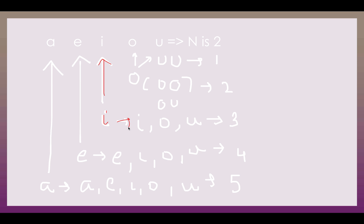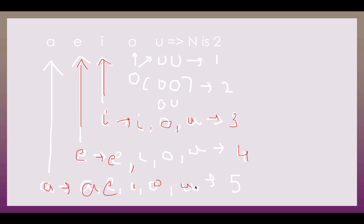If the first character is i, the second character can be i, o, or u — count becomes 3. With e as the first character, possibilities are 'ee', 'ei', 'eo', 'eu' — count becomes 4. With a, you can have a, e, i, o, u as the second character — count becomes 5. The total for n equals 2 is 1+2+3+4+5 = 15.